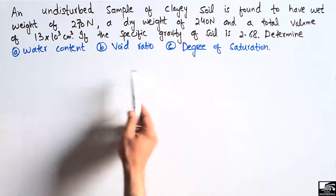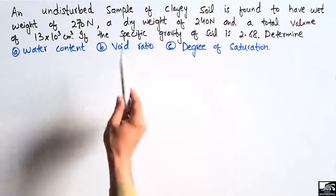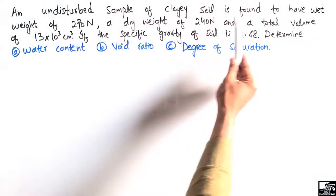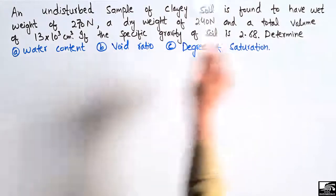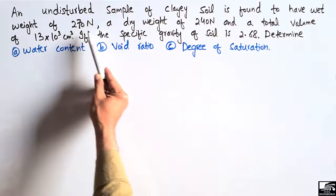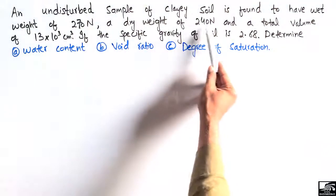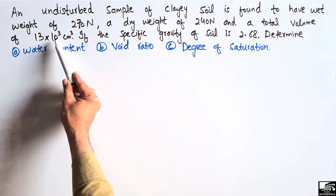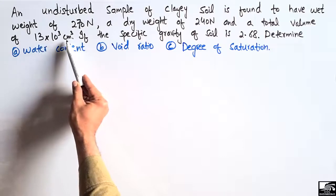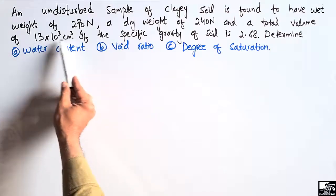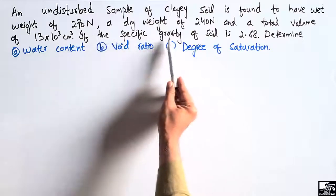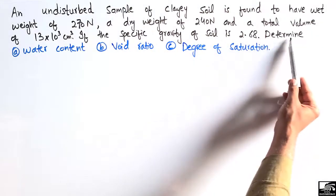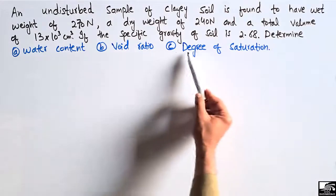The problem states that an undisturbed sample of clay soil is found to have a wet weight of 270 Newton, a dry weight of 240 Newton, and a total volume of 13 × 10³ cubic centimeters. If the specific gravity of the soil is found to be 2.68, then determine the water content, the void ratio, and the degree of saturation for this clay.